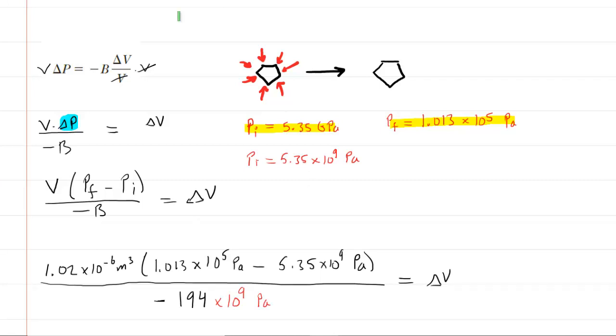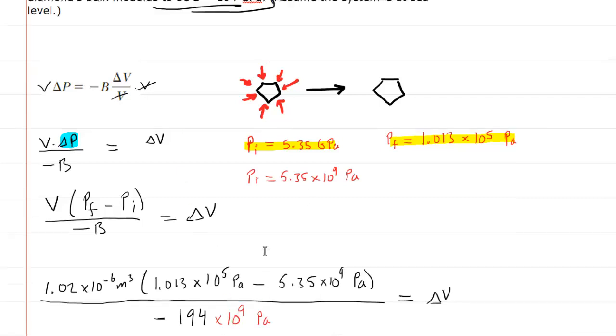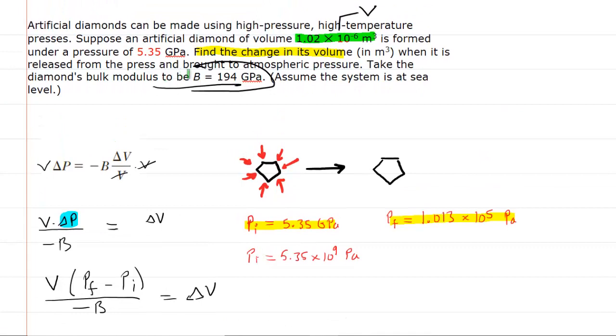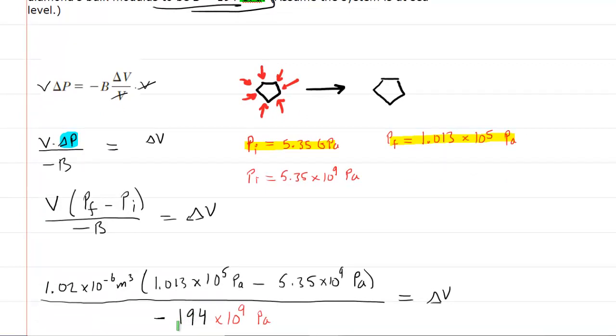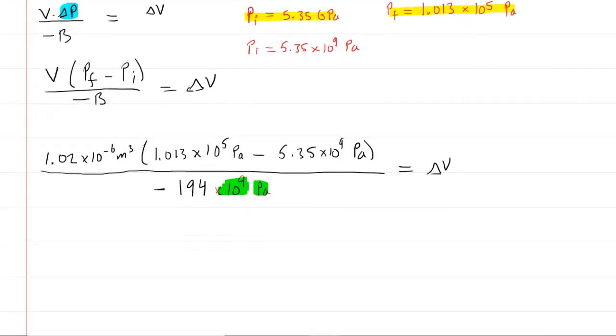The known values have been plugged in. I did neglect to mention that the bulk modulus, that value of B, was also given in gigapascals. So just be careful. You would take your given value, which in our case was 194, and then multiply that by 10 to the power of 9 so that you get it into the standard unit of pascals. Once you plug this expression into your calculator, you will get a very small change in volume.